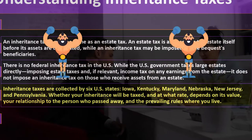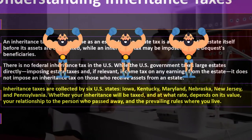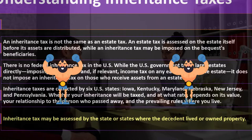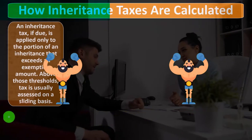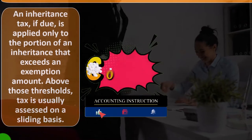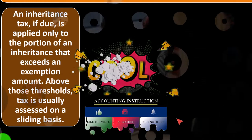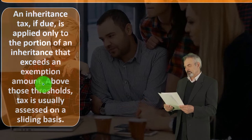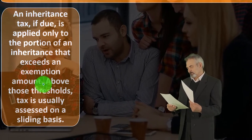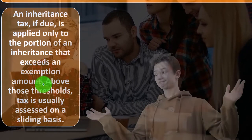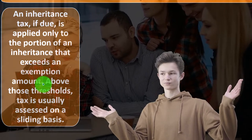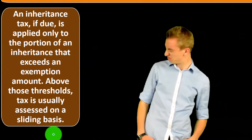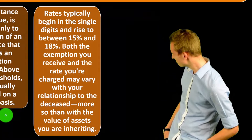Inheritance taxes are collected by six US states: Iowa, Kentucky, Maryland, Nebraska, New Jersey, and Pennsylvania. Whether your inheritance will be taxed, and at what rate, depends on its value, your relationship to the person who passed away, and the prevailing rules where you live. An inheritance tax, if due, is applied only to the portion of an inheritance that exceeds an exemption amount — above those thresholds, tax is usually assessed on a sliding basis with progressive rates.